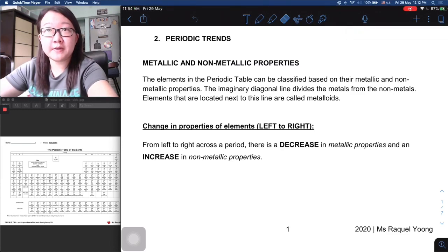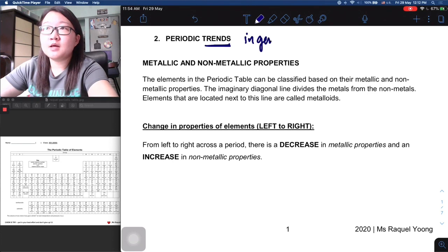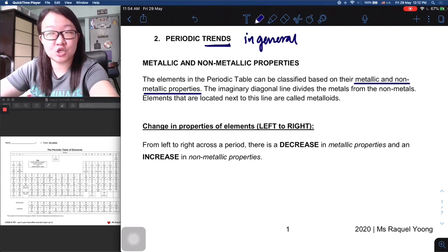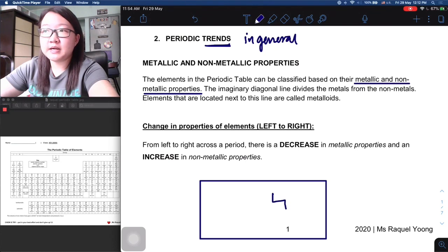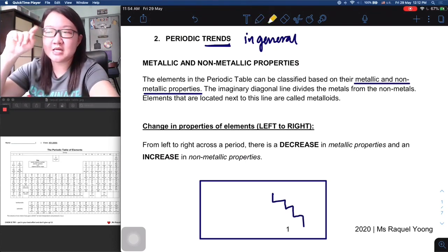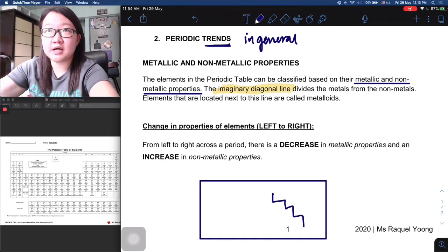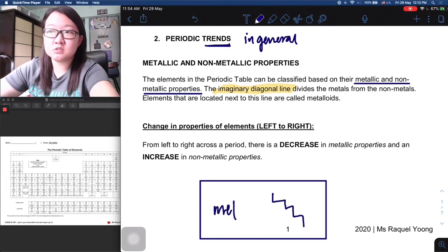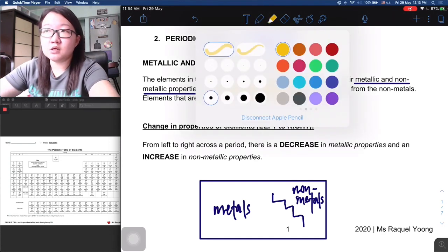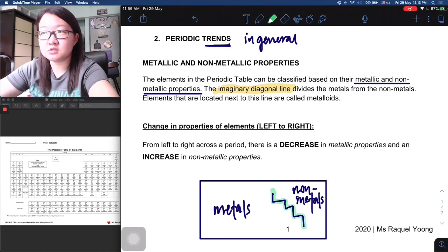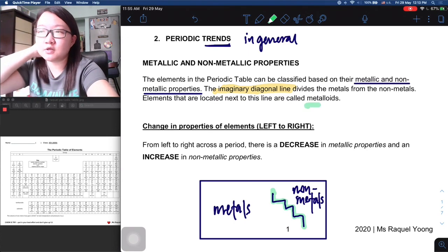Let's move on to the second part which is on periodic trends. The elements in a periodic table can be classified in some way, and we are also able to derive certain trends in terms of properties. It can be classified based on the metallic as well as non-metallic properties. By now you should be very familiar that your periodic table you can draw this staircase thing - an imaginary diagonal line which will divide your metallic elements on the left-hand side from your non-metallic elements on the right-hand side.